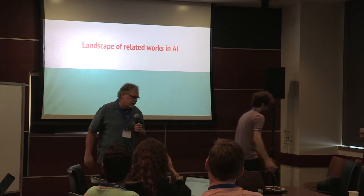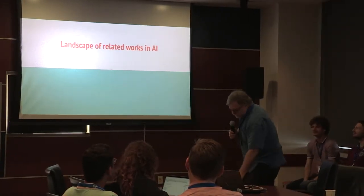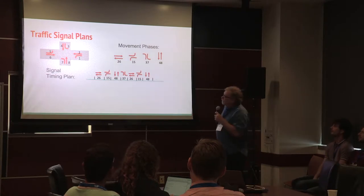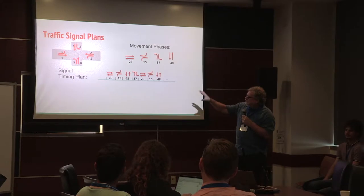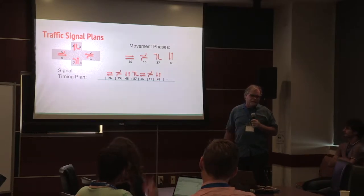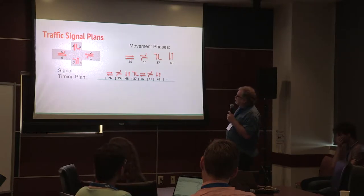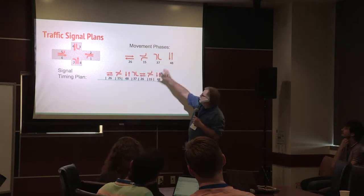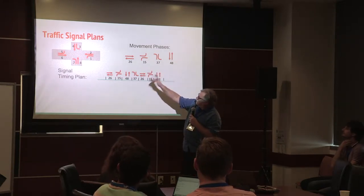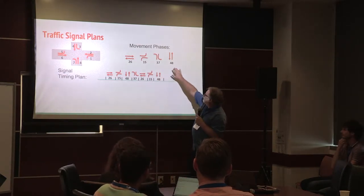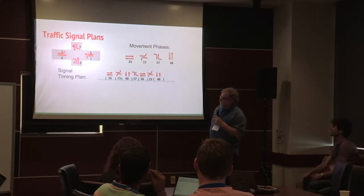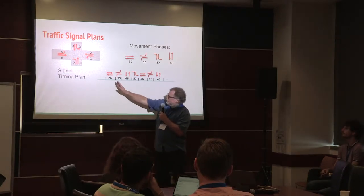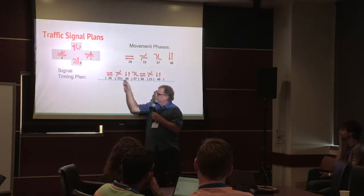To set the stage, let's look more concretely at the problem. What we have here is a representation of the plan — the artifact that controls the traffic signal. Traffic engineers break compatible movements of vehicles into movement phases. We have an east-west phase, a north-south phase, turning phases. The signal timing plan is just a sequence of these phases of varying duration. You notice phases go in a particular order and then repeat — that's very common, though not required.